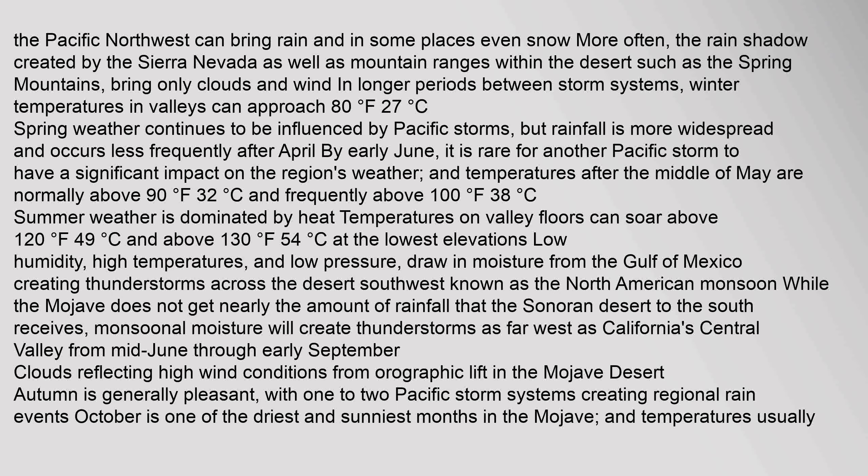The Pacific Northwest can bring rain and in some places even snow more often. The rain shadow created by the Sierra Nevada, as well as mountain ranges within the desert such as the Spring Mountains, bring only clouds and wind. In longer periods between storm systems, winter temperatures in valleys can approach 80 degrees.